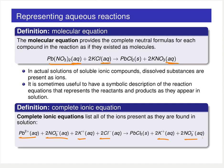The lead chloride is insoluble, so it's going to form a solid and we don't break it apart. We break apart all those aqueous solutions as the ions are present in the aqueous solution, and we come up with what is called the complete ionic equation. The complete ionic equation lists all of the ions present as they are actually found.